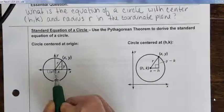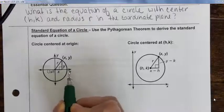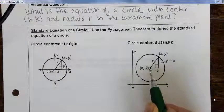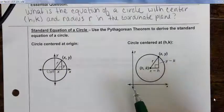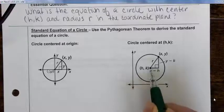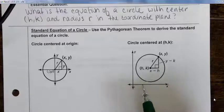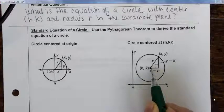There will be other circles that get translated — they move in the coordinate plane. Like this one here: notice it's not centered at the origin. The center has actually been translated — it's been moved to the right h units and up k units.